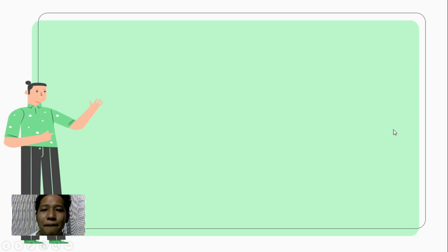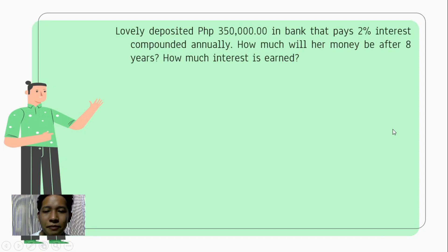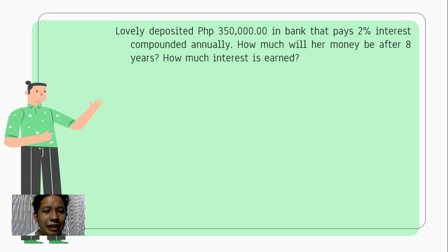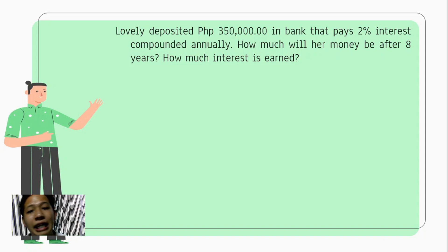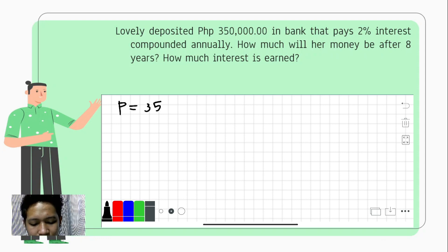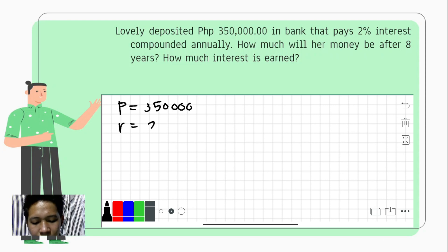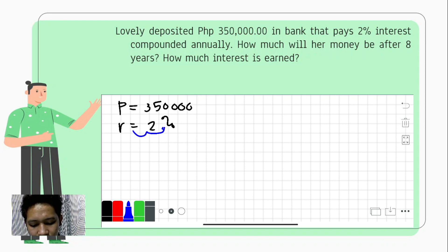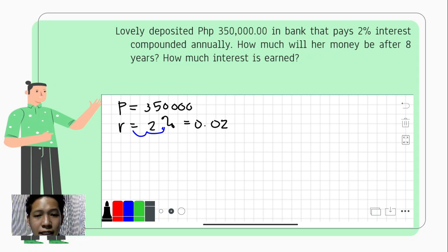Let us have an example. Lovely deposited 350,000 pesos in a bank that pays two percent interest compounded annually. How much will her money be after eight years, and how much interest is earned? The given are: principal = 350,000 pesos, rate = two percent, which converted to decimal is 0.02, and time = eight years.